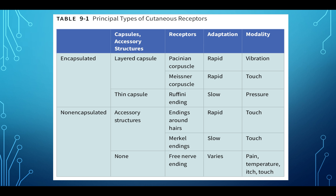Encapsulated versus non-encapsulated receptors: non-encapsulated are mostly your crude touch, pain touch — temperature, itch, pain. You get your free nerve endings, Merkel endings, and endings around hairs. Hair endings are very rapidly adapting — like when you put a hat on and feel it at first, then forget it's there. Merkel endings are slow. Free nerve endings for pain can vary depending on the chronicity of the pain.